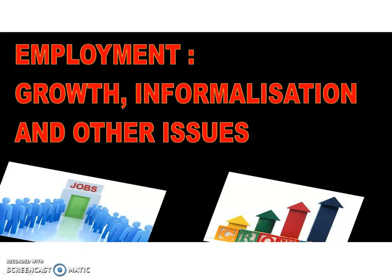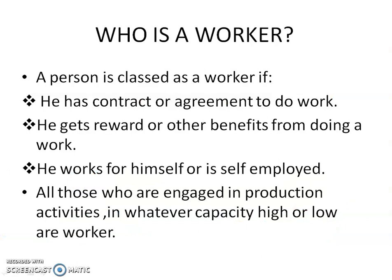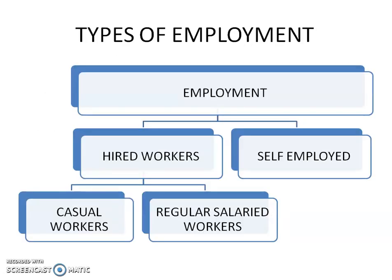In the last class we discussed the meaning of worker — all those who are engaged in production activities in whatever capacity, high or low, are termed as workers. We also discussed different types of employment: hired workers and self-employed. Hired workers are further divided into casual workers and regular salaried workers. We also discussed data related to participation of people in employment.